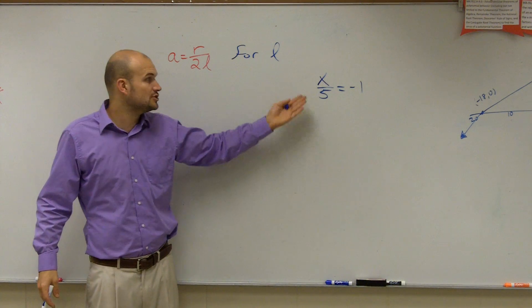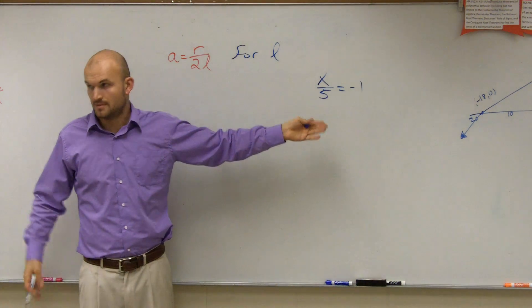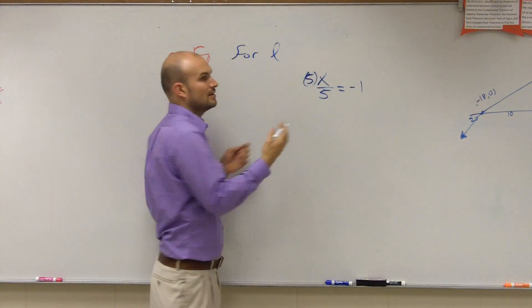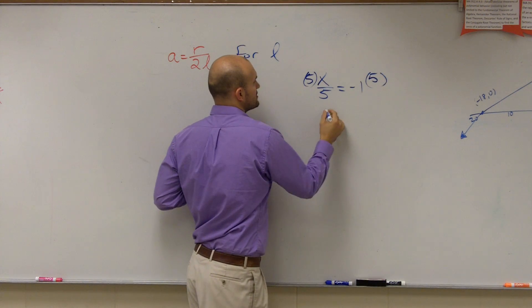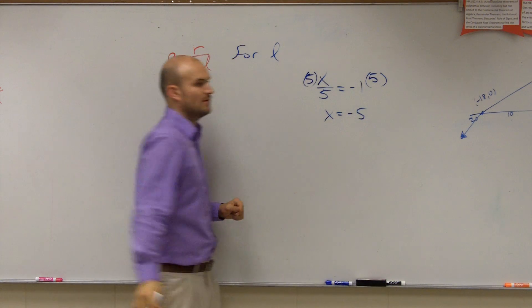It's being divided by 5. So to undo divide by 5, we have to multiply by 5, and we also do it because that's how we get rid of our fraction. So we get x equals negative 5.